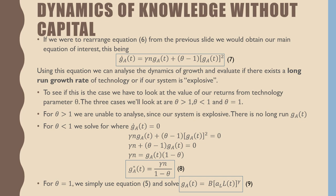For θ < 1, we solve for where our growth rate transition equation for technology equals zero. After a little bit of algebra, we arrive at equation 8, where our long-run growth rate of technology equals γn over (1 minus θ).